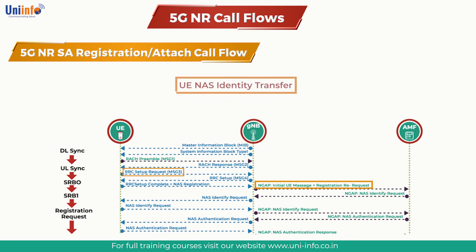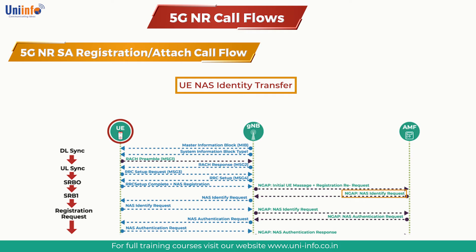UE Identity Transfer is conditional. If there is a change in the last AMF selected by the gNodeB and the SUCI is not provided by the UE nor retrieved from the old AMF, then the identity request procedure is initiated by the AMF sending an Identity Request to the UE requesting the SUCI. The UE responds with an Identity Response including the SUCI. The UE derives the SUCI by using the provisioned public key of the HPLMN.